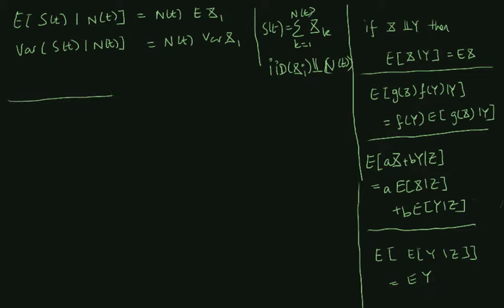To get us started, I've written up a couple of conditional expectation rules. These are the only rules you really need to work with conditional expectation — you just have to get used to them. The first rule is that if X and Y are independent stochastic variables, then the conditional expectation of X given Y is just equal to the expectation of X.